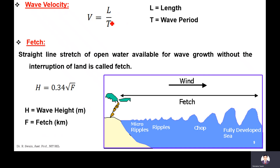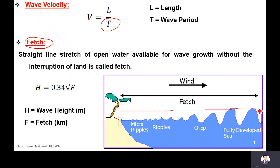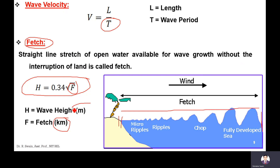Wave velocity is calculated as wavelength divided by time period. Fetch is the straight-line stretch of open water available for wave growth without interruption by land — from the starting point to the end point of a particular wave. Wave height is calculated using the empirical formula: H = 0.34 × √F, where F is the fetch in kilometers and H will be in meters.